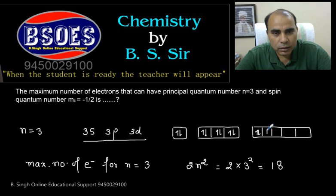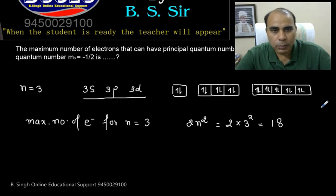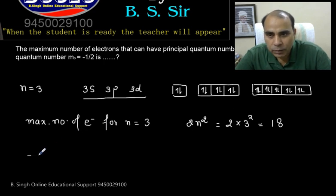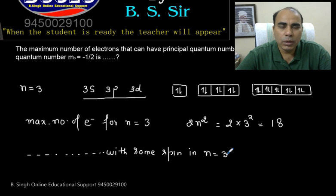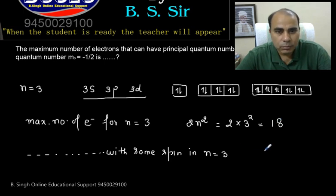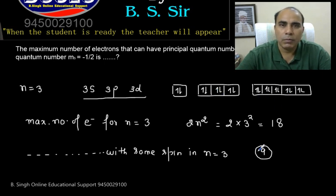The simple thing is that maximum electrons - half spin positive and half spin is negative. That means, we can say here that maximum number of electrons with same spin in n is equal to 3. Eighteen half? Nine. Simple.